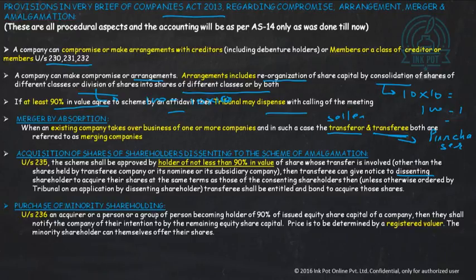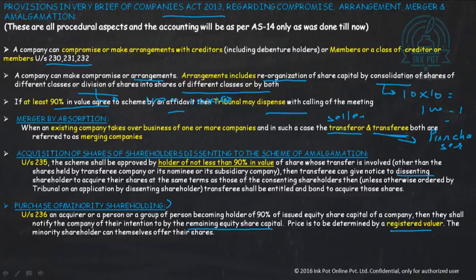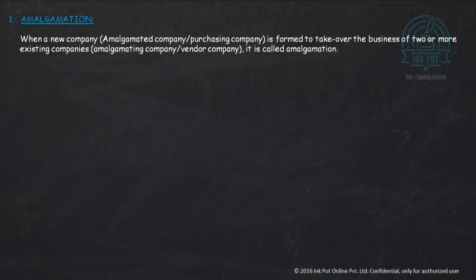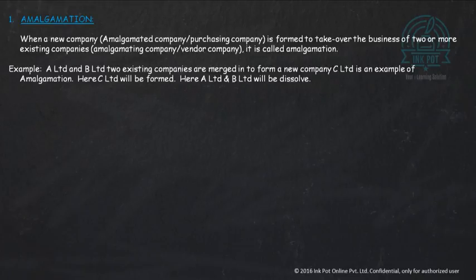A person or group of persons becoming holders of 90 percent of the issued equity share capital of a company shall notify the company of their intention to buy the remaining equity share capital. The price is to be determined by a registered valuer. Minority shareholders can offer their shares — they have no other option. When a company takes over the business of two or more other companies, it is called amalgamation. For example, A Limited and B Limited forming a new company C Limited, where A and B dissolve, is amalgamation in the nature of merger.